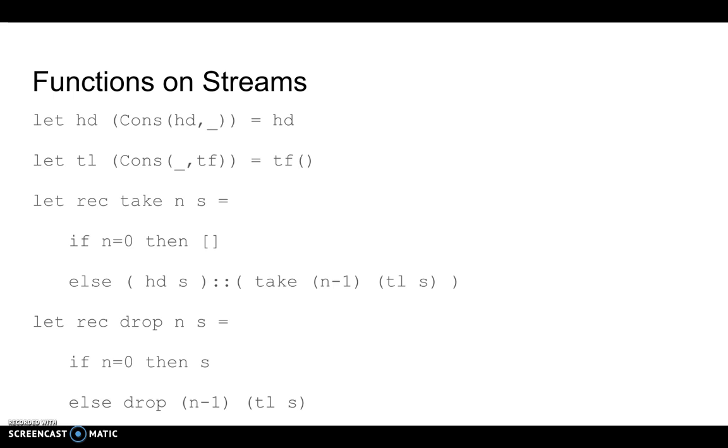In our recursive case, we want to first take the element at the current point in the stream, which we get using our head function. This should be consed onto the list of every other element in the stream. To get this list, we want to recursively apply take, decrement n by one to show that we've already obtained one element, and pass it tail s as the stream. This will move us to the next element in the stream and call take on that.